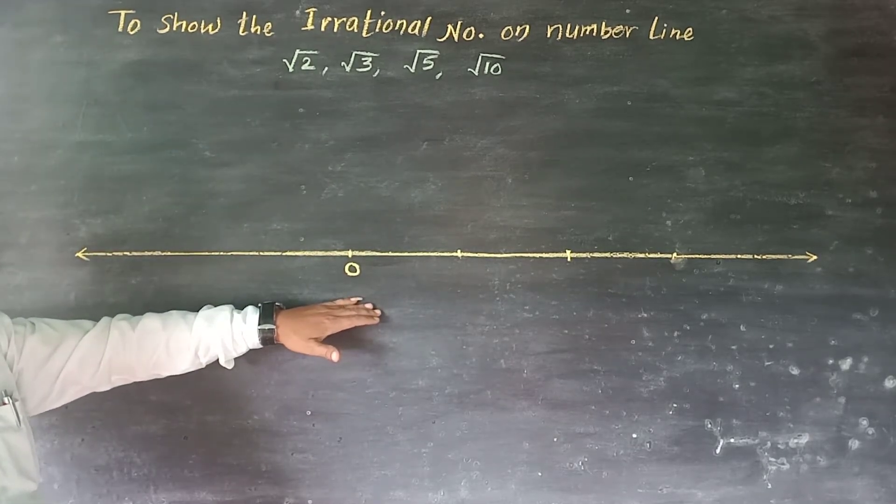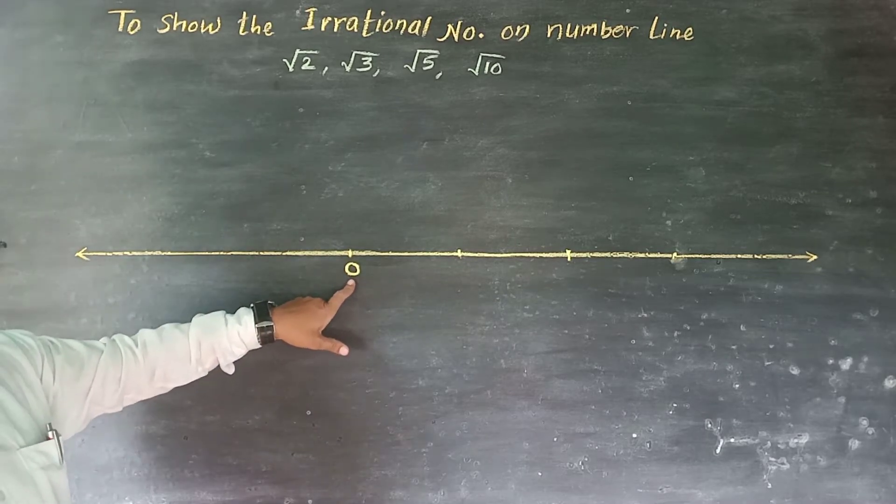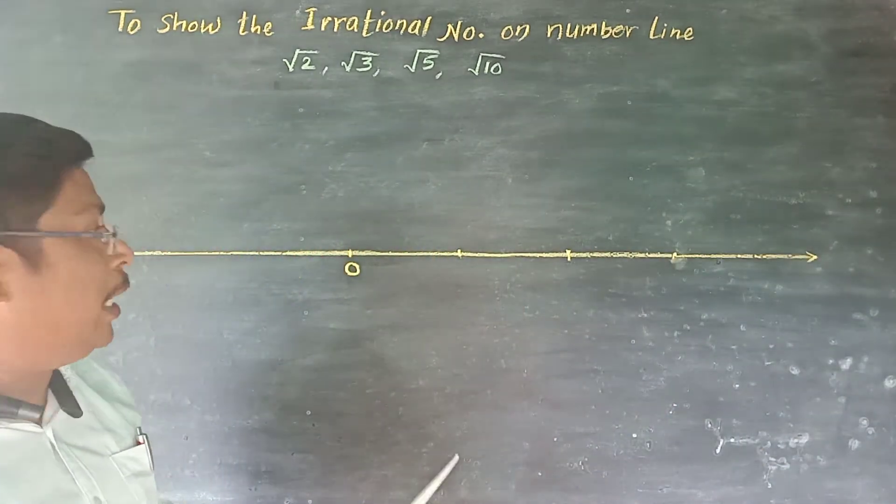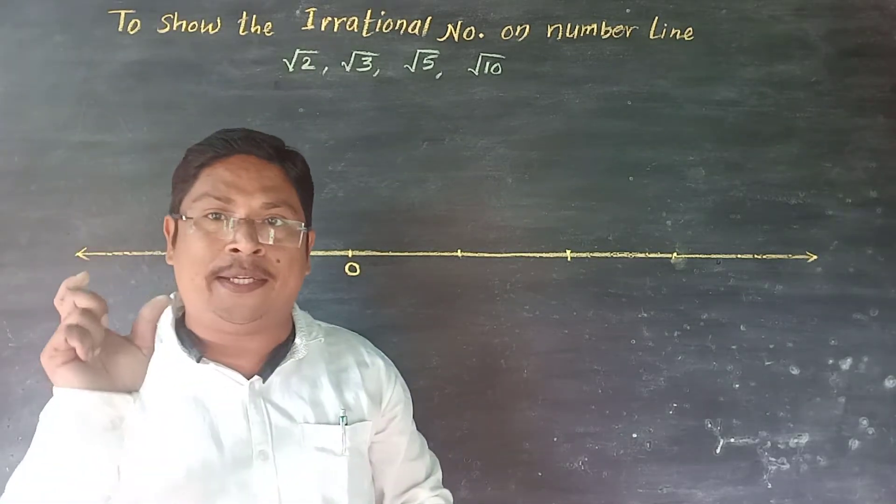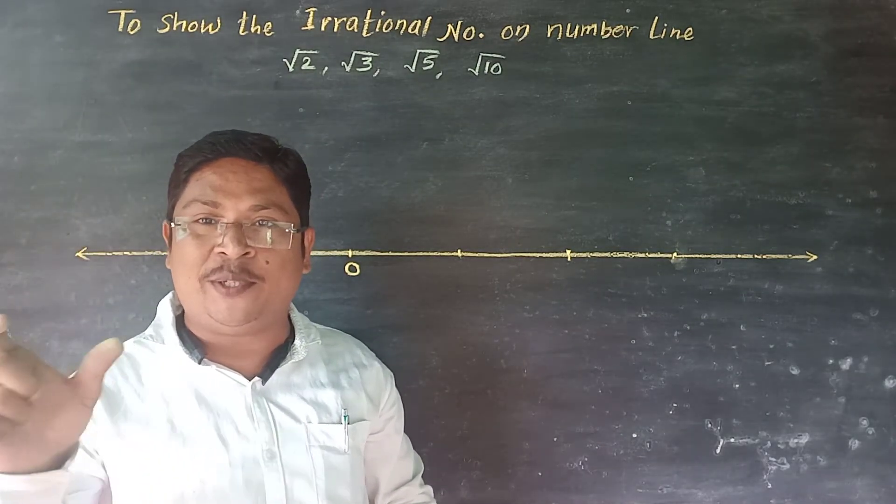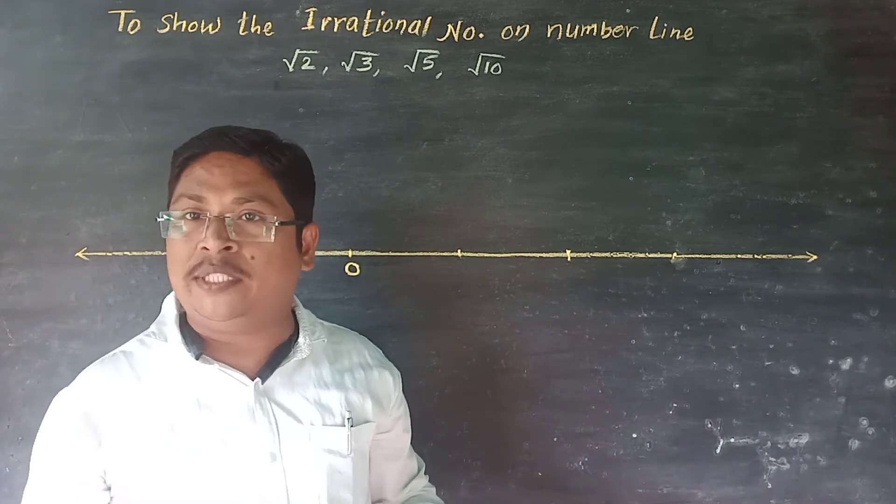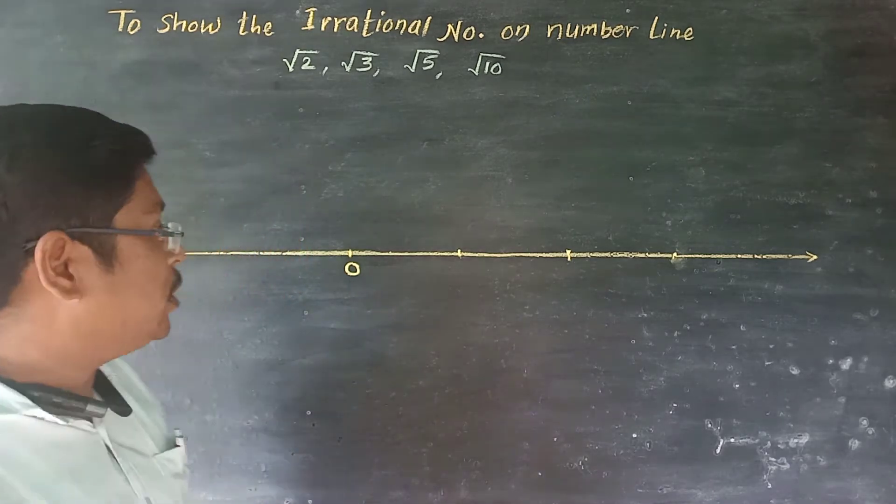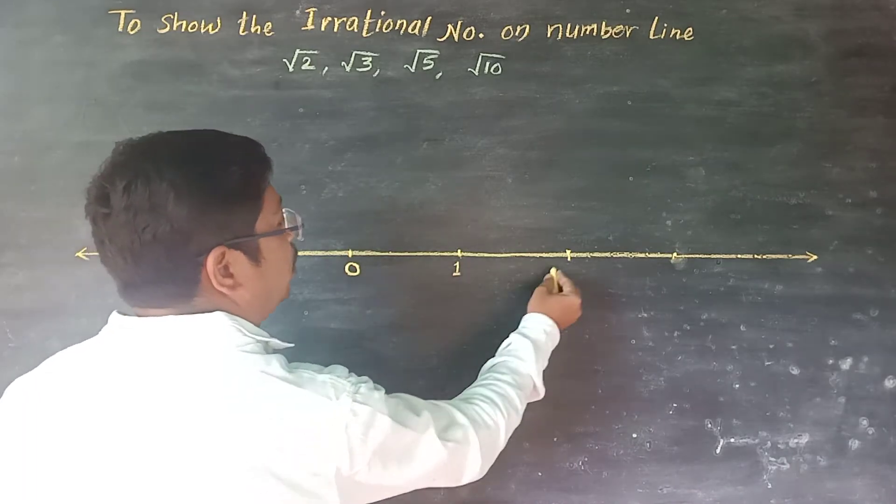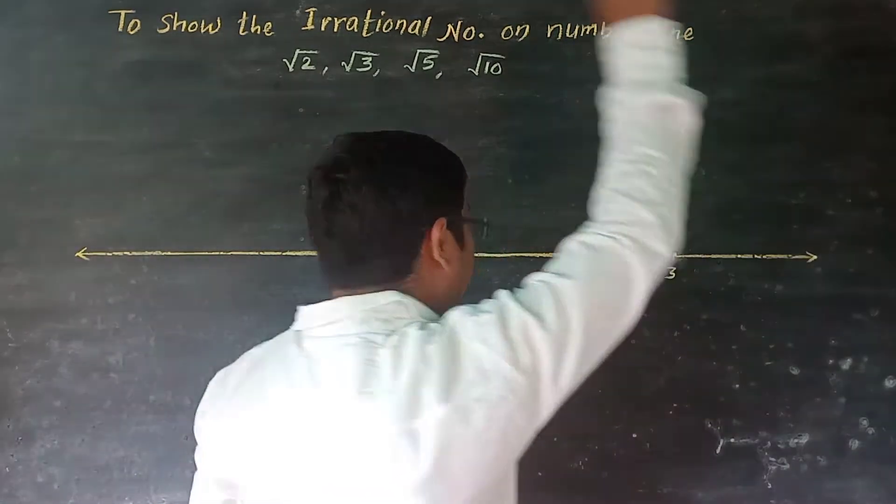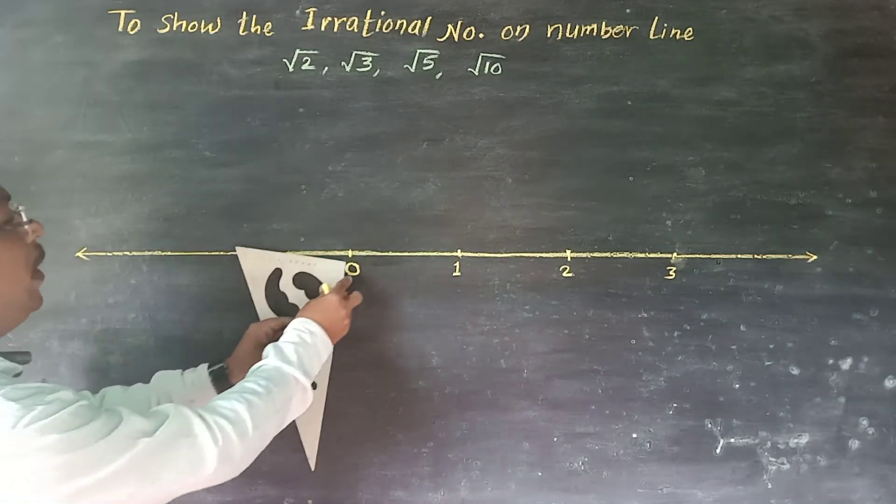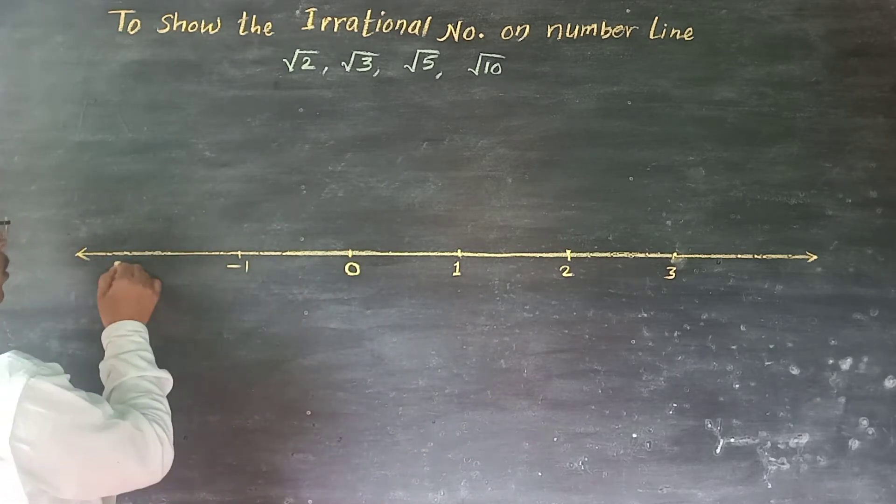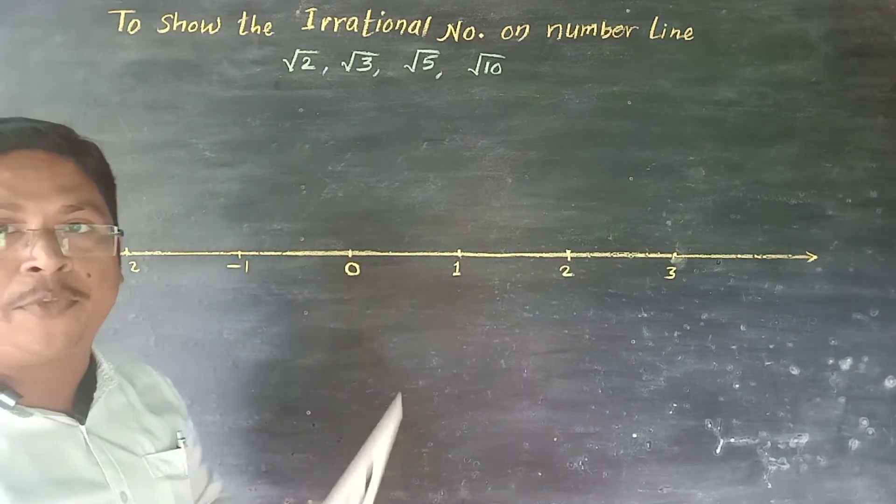Here on the number line, zero is the origin. On the number line we mark numbers at equal unit distance. The unit distance can be two centimeter, three centimeter or one centimeter - you can use different unit distances as long as they are equal. This is one, two, three and many more. On this side we have the negative numbers, negative one, negative two.